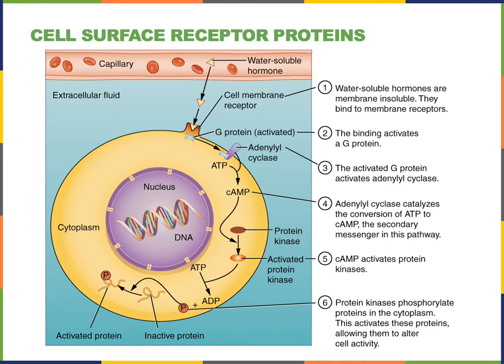In contrast, cell surface receptors such as the G protein-linked receptors will lead to a signal transduction pathway where there is a cascade of biochemical events with one protein activating another protein. Here we see the receptor activates the G protein, and the G protein then activates the enzyme adenylyl cyclase. Often a signal transduction pathway will involve a second messenger.